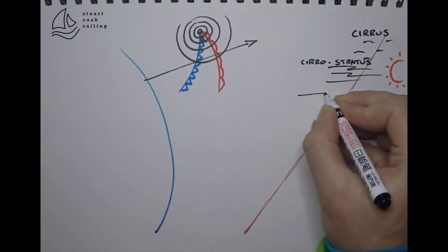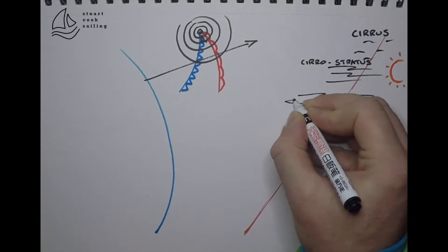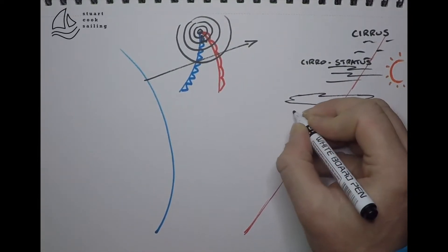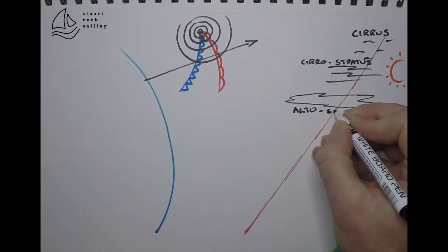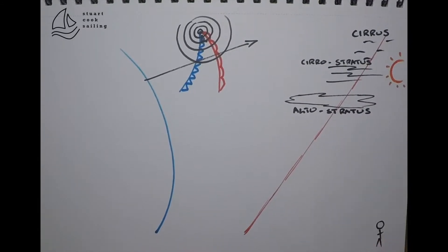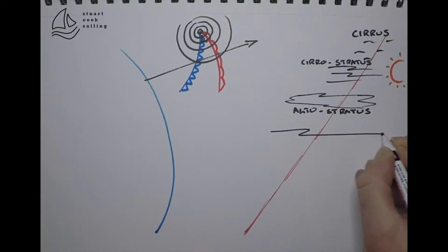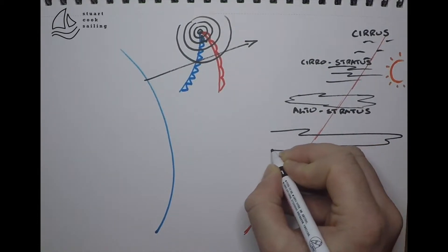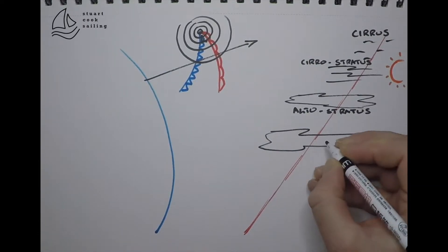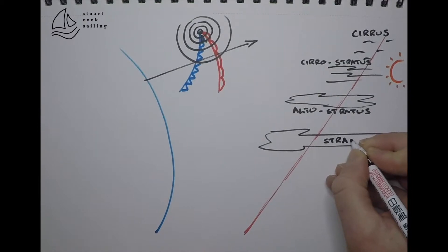That layered cloud will then become slightly lower, slightly thicker, giving us alto stratus, until eventually we have a nice thick layer of cloud. This is our basic stratus layer.